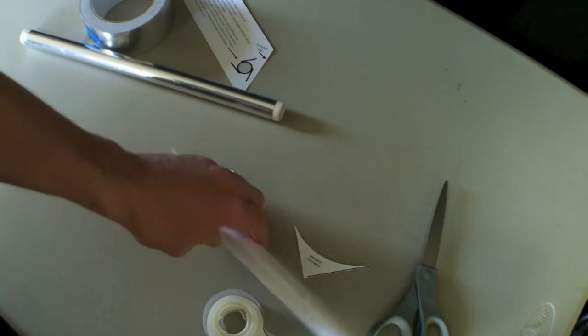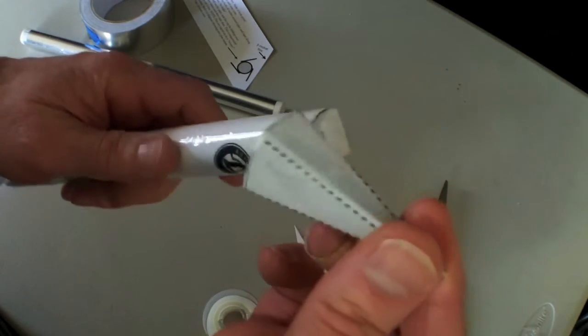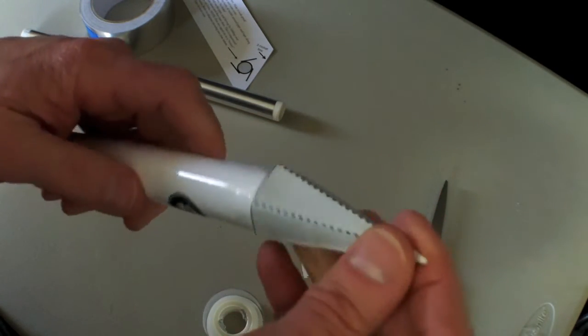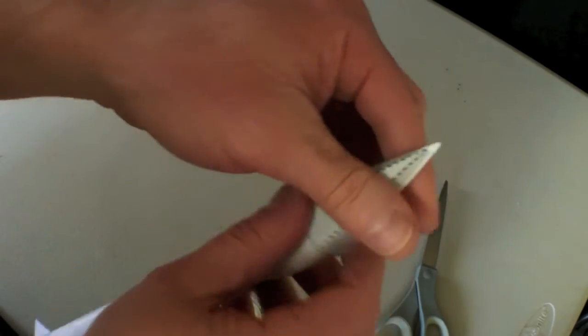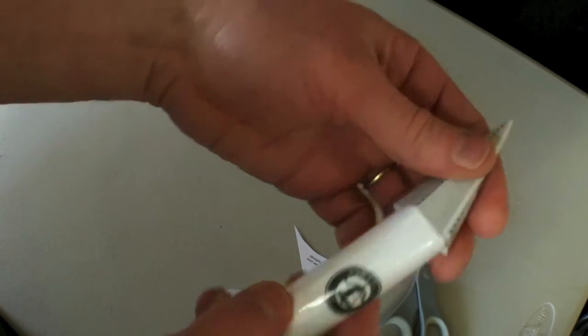But when the rocket hits the ground, it will essentially be destroyed. And it only takes a couple times of landing on a surface like that. So when you put this nose cone on...